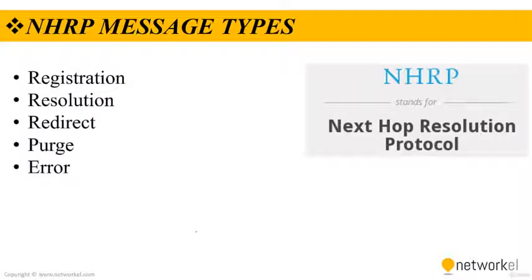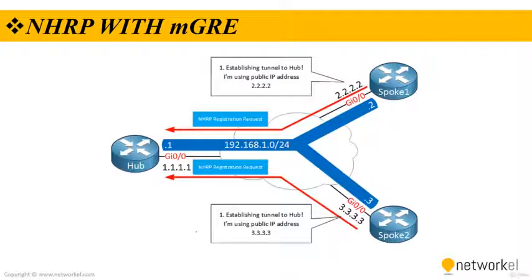When it comes to NHRP message types, there are five different types: registration, resolution, redirect, purge, and error. Let's now have a look at how NHRP works with multipoint GRE.